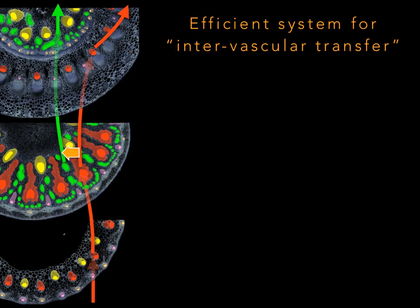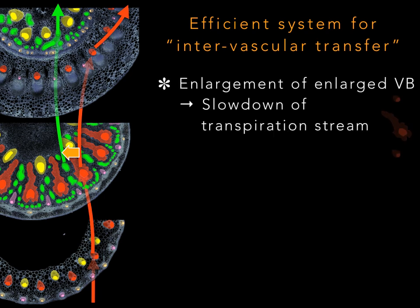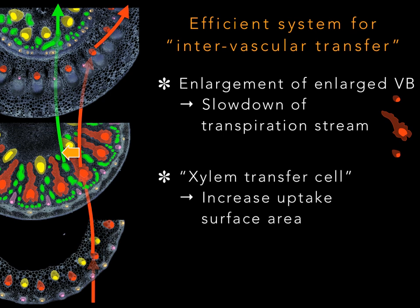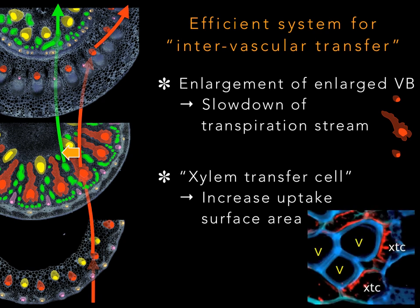There is an efficient system for the intervascular transfer in the node. One is to increase the xylem region of enlarged vascular bundles within the node. This enlargement can reduce the speed of mass flow in the xylem, making the retention time of nutrients longer in the node. The other one is to increase the active absorptive surface area in the node. This is achieved by xylem transfer cells, which have a markedly extended plasma membrane surface area that faces the xylem vessels, caused by ingrowth of the cell wall.